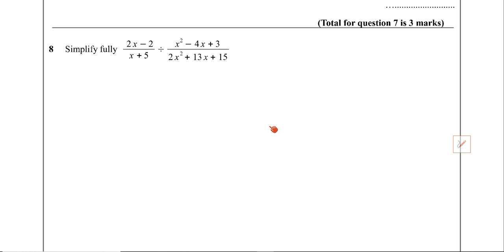So when you look at that, what do you think you're going to do first? Simplify both expressions first. I would pick you up on one point — you said simplify both equations. Why do we not even have one equation? Because there's no equal sign. So we're simplifying just fractions — expressions. So which one should we try and simplify? Do you think there's going to be any simplification here? No. I've got 2x minus 2, and x plus 5 — I can leave that one.